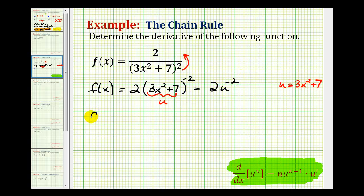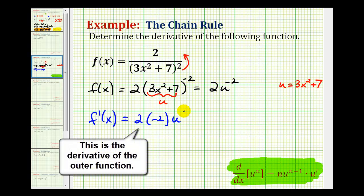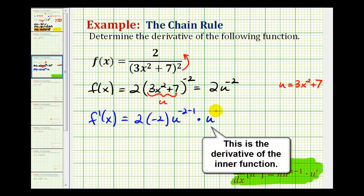So now to determine f prime of x, we need to determine the derivative of two u to the negative two with respect to u, and then multiply by u prime. So using our extended power rule, we know we're going to have two times negative two times u to the negative two minus one times u prime.